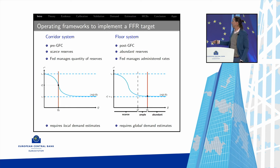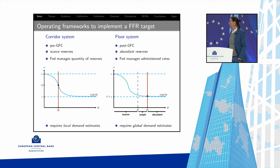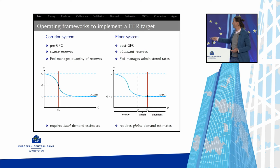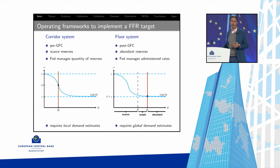Since the great financial crisis we're in an abundant reserve world, running a floor system where you operate on the very flat part. The way you manage the rate is no longer open market operations — they'd need to be too big to get any traction. So you manage administered rates. The U.S. has three administered rates: the discount window rate, interest on reserves (IOR), and the ONRRP — the overnight reverse repo facility.